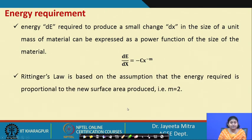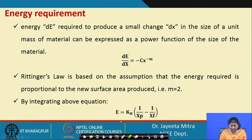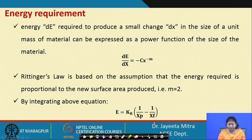There are three different laws of size reduction. Rittinger's law assumes energy required is proportional to the new surface area produced, so m = 2. By integration: E = K_R × (1/x_p − 1/x_f), where K_R is Rittinger's constant, x_p is the product dimension, and x_f is the feed dimension. This law tends to apply for fine grinding.